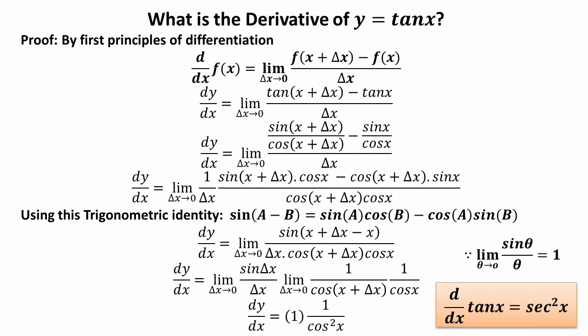Applying the limit: Δx/Δx = 1, and using the standard result lim(θ→0) sin(θ)/θ = 1, so dy/dx = 1/[cos(x + 0) · cos(x)] = 1/cos²(x). Since sec(x) = 1/cos(x), we have sec²(x) = 1/cos²(x). Therefore dy/dx = sec²(x). The derivative of tan(x) is equal to sec²(x).